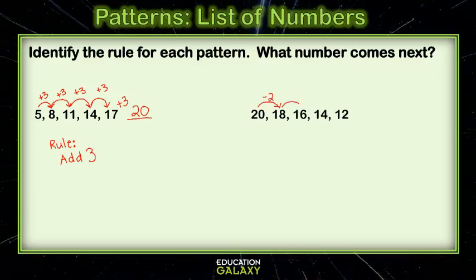Then, from 18 to 16, I also have to go down. And again, I'm taking away 2. To get from 16 to 14, I take away 2. From 14 to 12, I take away 2.